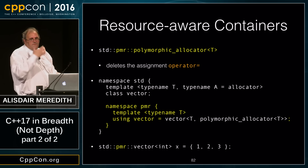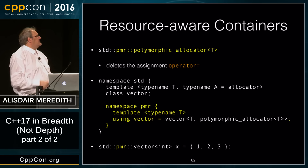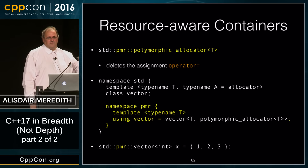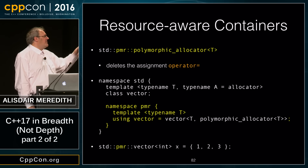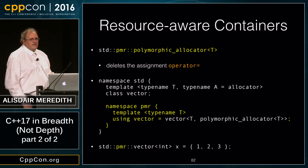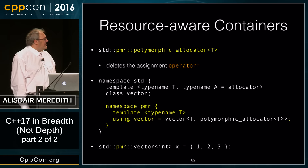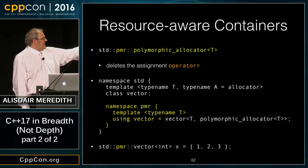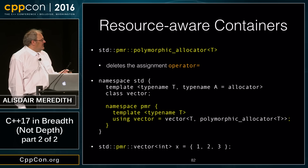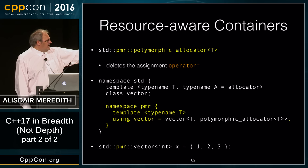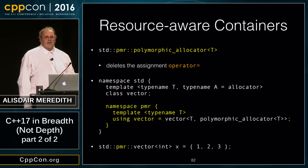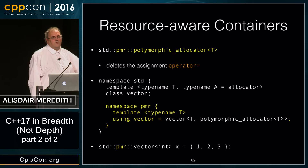pmr::polymorphic_allocator<T> wraps all these memory resources with allocator_traits compatibility. Each container header gets a new alias using the polymorphic allocator rather than std::allocator, so std::pmr containers can use these type-erasing allocators efficiently.